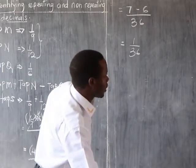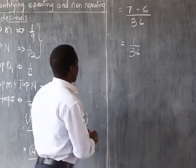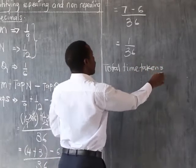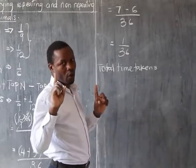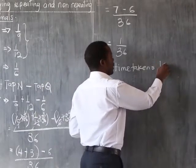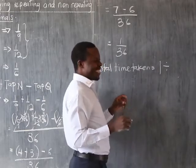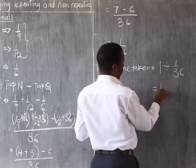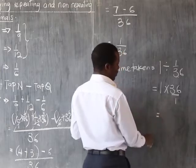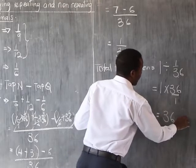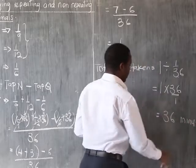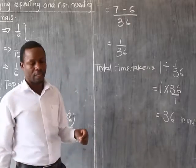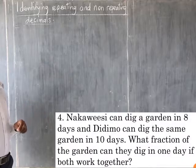So now we want to look at the total time taken for the tank to be filled. The total time taken will be the number of tanks we have — which is one — divided by the amount of water the taps put in the tank in one minute, which is 1 out of 36. This gives us 1 times 36, which gives us 36 minutes. So all taps will take 36 minutes to fill the tank.